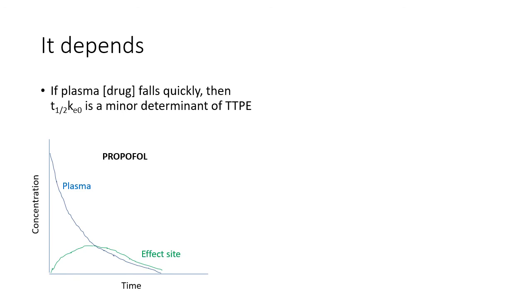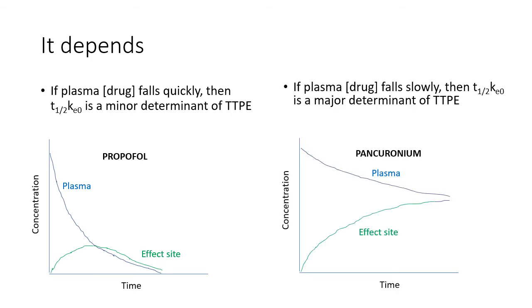If the plasma concentration of a drug falls quickly, then the T half KE0 is a minor determinant of the time to peak effect. If the plasma concentration falls slowly, then the T half KE0 is a major determinant of the time to peak effect.